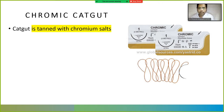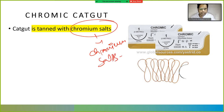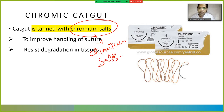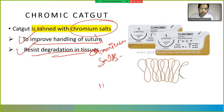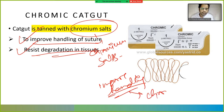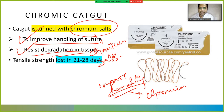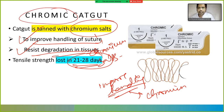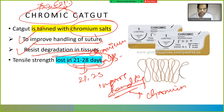Chromic catgut is catgut tanned with chromium salts. Chromium salts are added to improve handling of the suture and to resist degradation in tissues. The tensile strength is maintained for 21 to 28 days — a mnemonic: chromic has 7 letters, and C is the 3rd alphabet, so 7×3 = 21.